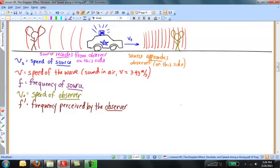Let's take the approaching case first. If the source is approaching the observer, or the observer is approaching the source, or they're moving in such a way that the distance between them is decreasing, then F prime, the frequency that the observer perceives, is equal to F times the quantity V plus V observer divided by V minus V source.